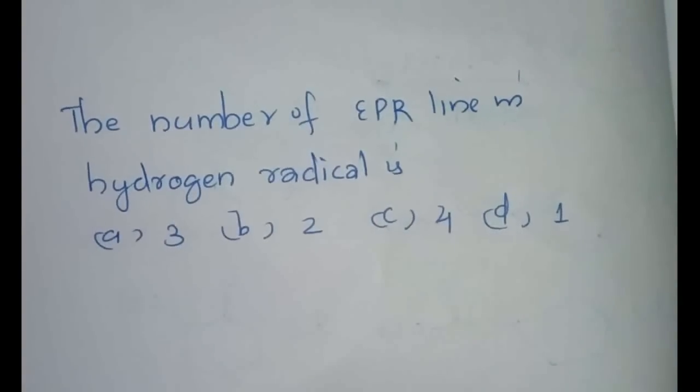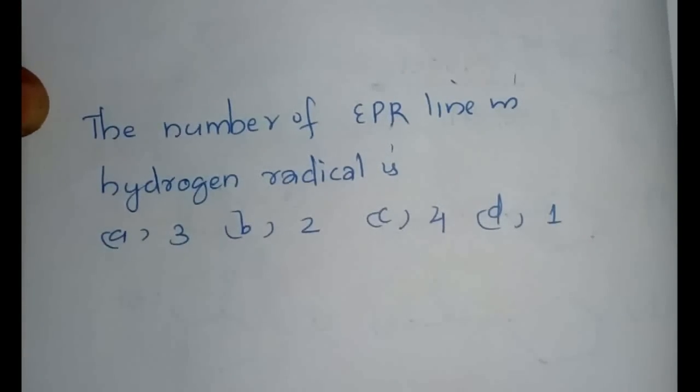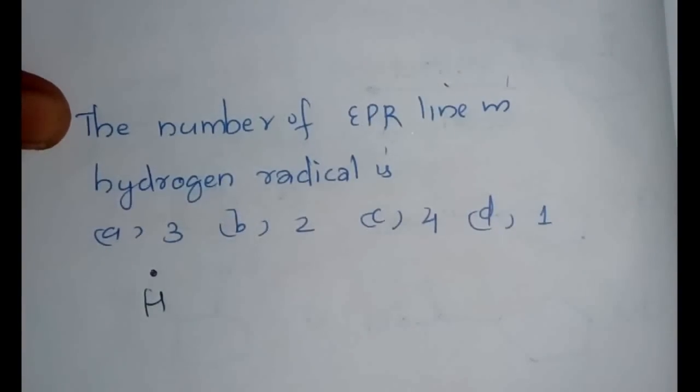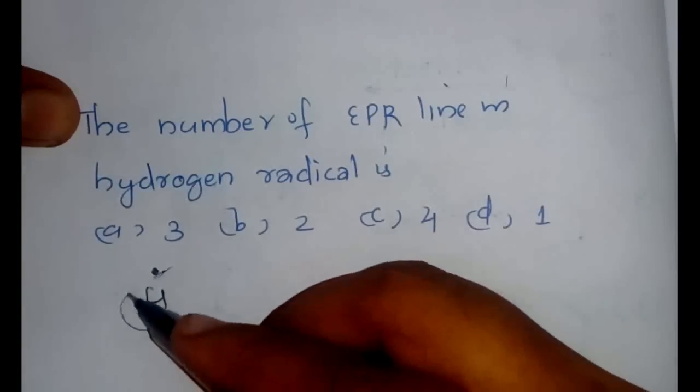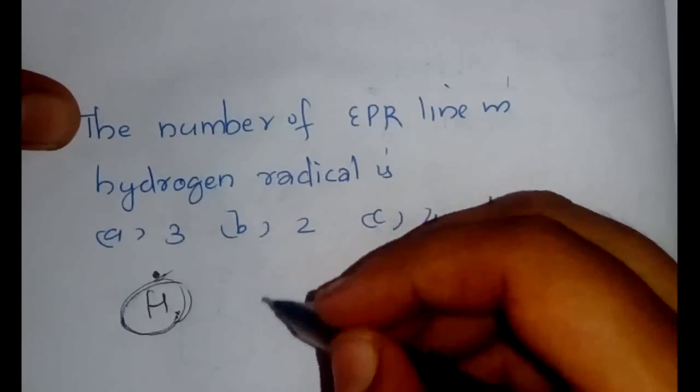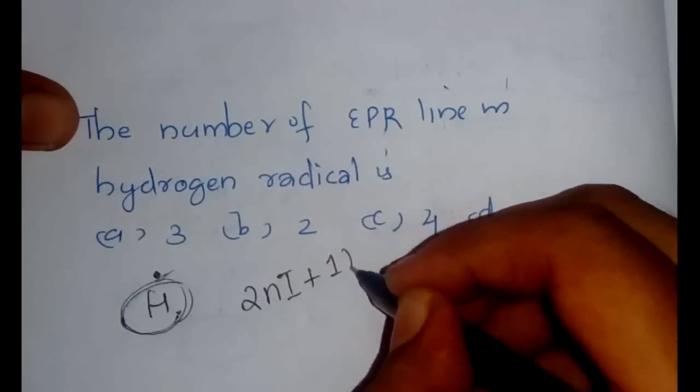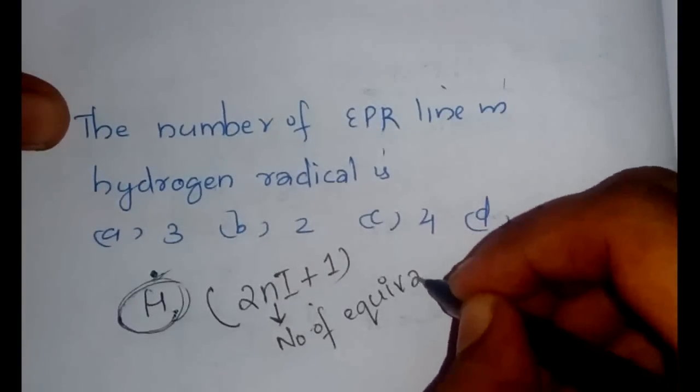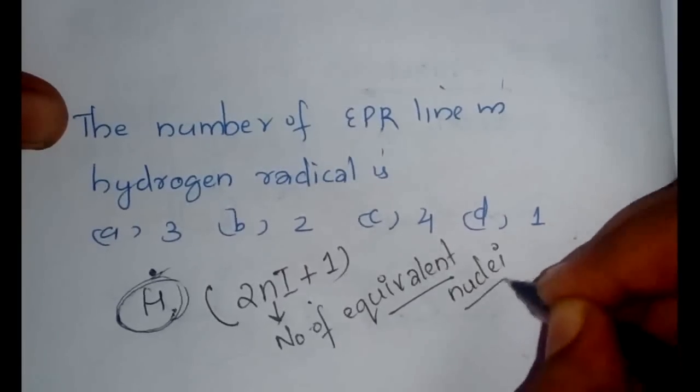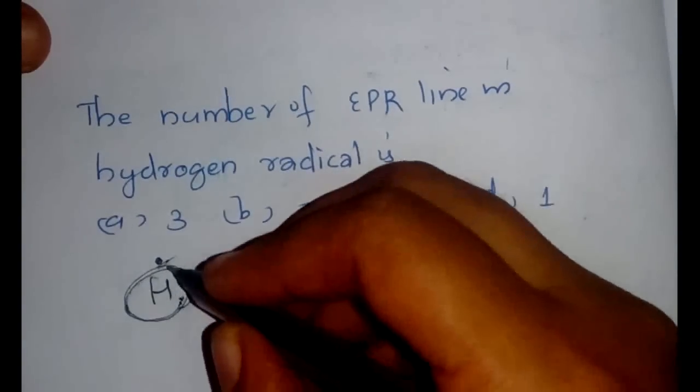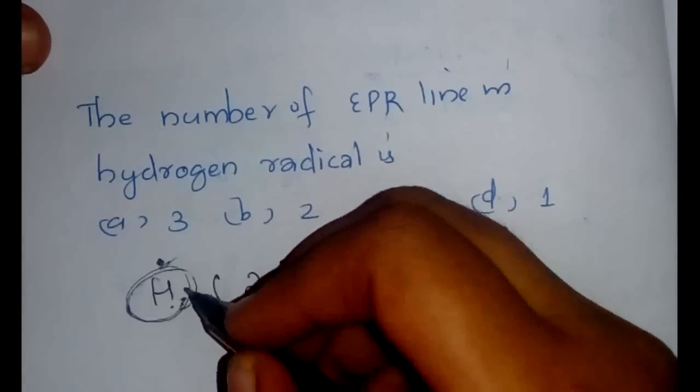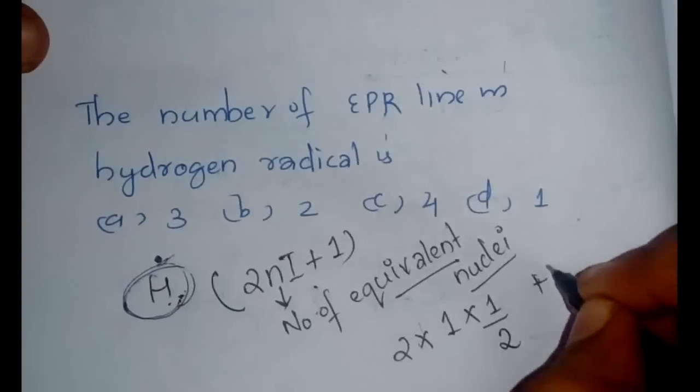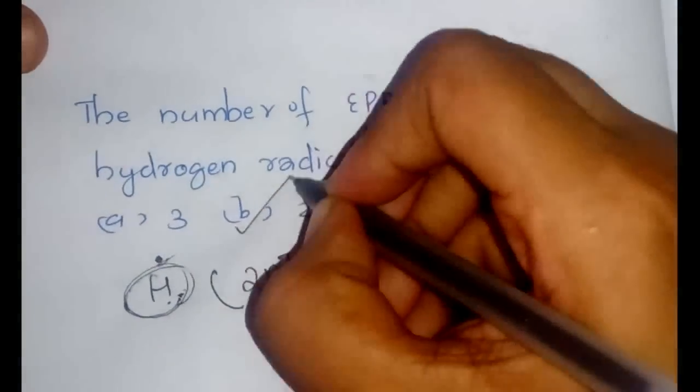Next question is the number of EPR lines in hydrogen radical. It is related to the electron spin resonance. Hydrogen radical means we are having only one electron. We expect it to have a single signal because there is only one electron. But what will happen if we are having a magnetic nucleus like hydrogen? There will be more number of lines which follows the equation 2NI plus 1, where N will be the number of equivalent nuclei. So here it will be 2 into 1 into 1/2 plus 1. So the number of lines will be equal to option B, is 2.